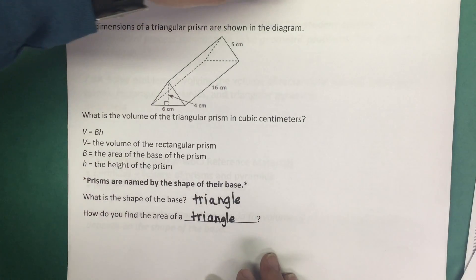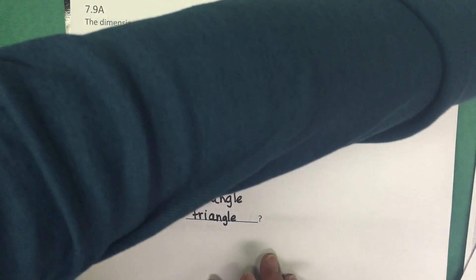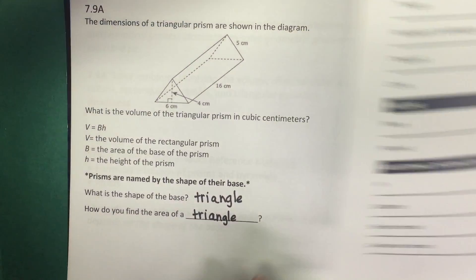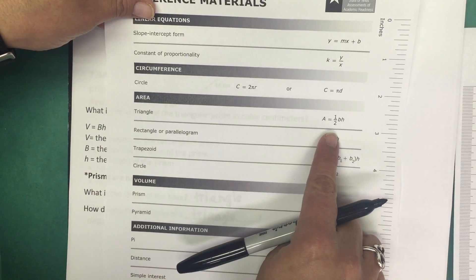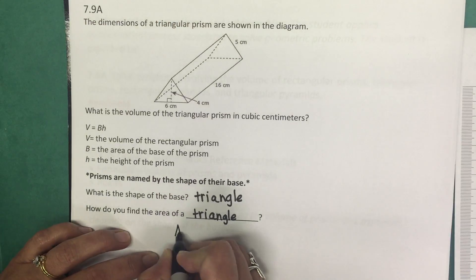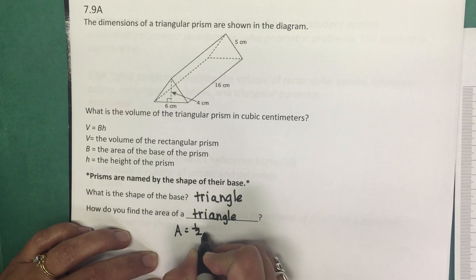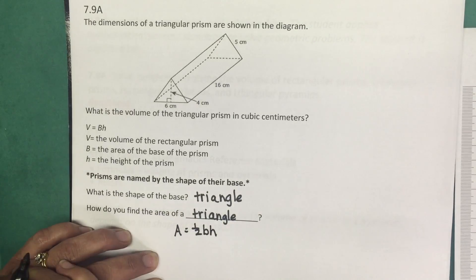Well, we can refer to the reference materials and on the reference materials it will provide the formula for the area of a triangle, which is area or A equals one half times the base times the height.